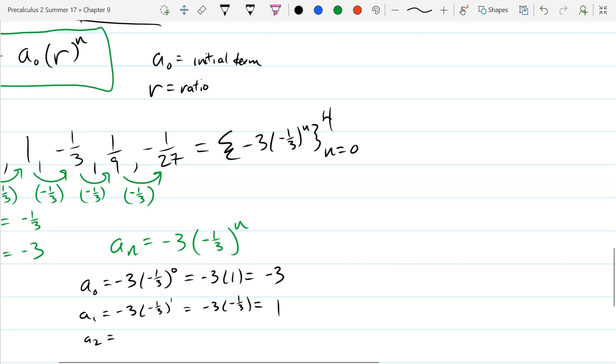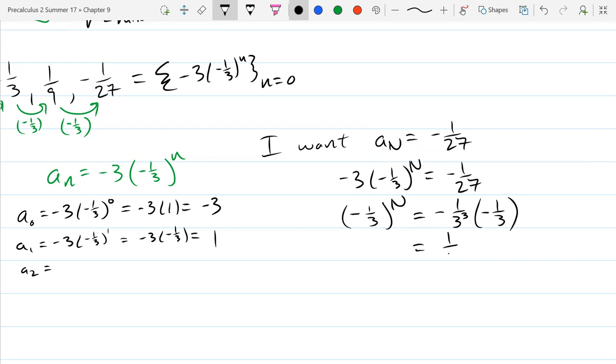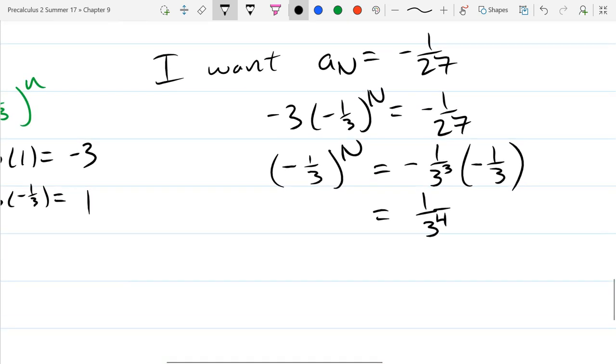Let's instead use some algebra to get there. So let's pretend we don't know that four goes there. So I want a big n to equal negative 1 27th. And I'm going to write the formula down for a n. Step one. Let's get this negative 3 out of here. So multiply both sides by negative 3. So I suck at multiplication. So I'm going to write 1 27th is 1 3rd cubed times negative 1 3rd. And this is positive 1 over 3 to the 4th power.